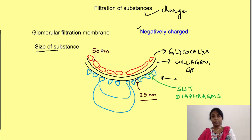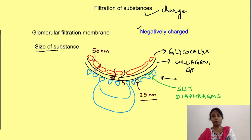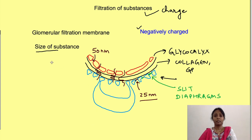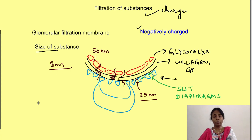However, that is not the case, because filtered substances must also pass through a trabecular network present in the basement membrane — a network of collagen and glycoproteins forming tortuous channels. So the maximum size of a substance that can actually pass through is around 8 nanometers only.